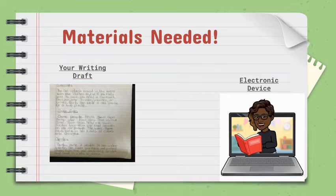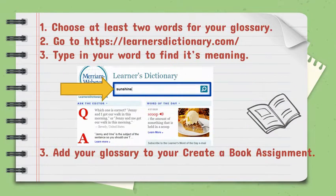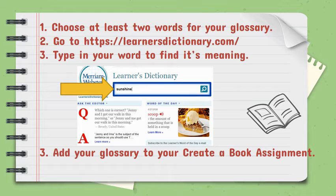Materials needed: your draft to read over your work, and an electronic device. Choose at least two words for your glossary, then go to learningdictionary.com and type in the words that you need to find the meaning for. Add your glossary to your Create a Book assignment.